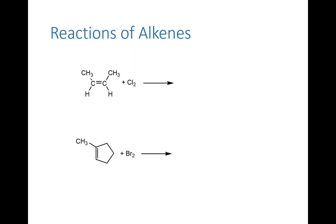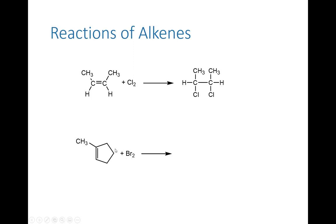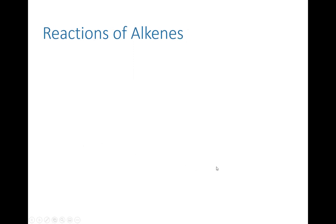In the first example, I have cis-2-butene reacting with chlorine — a chlorine atom adds to each side. This gives us 2,3-dichlorobutane. Here we have 1-methylcyclopentene, and we are adding bromine. This is a colorless liquid; bromine is red. When I add bromine to the organic compound, it reacts adding one bromine atom to each side, and instantly the color disappears from the bromine, because this product is almost certainly going to be colorless.